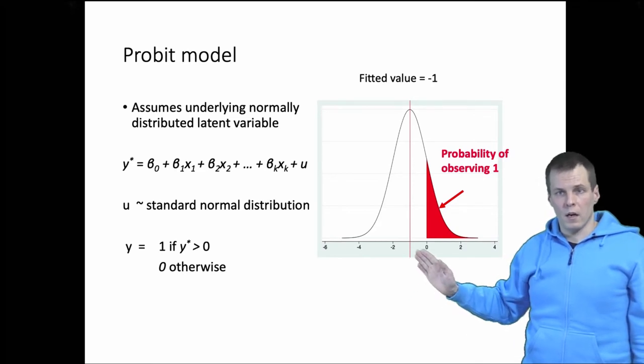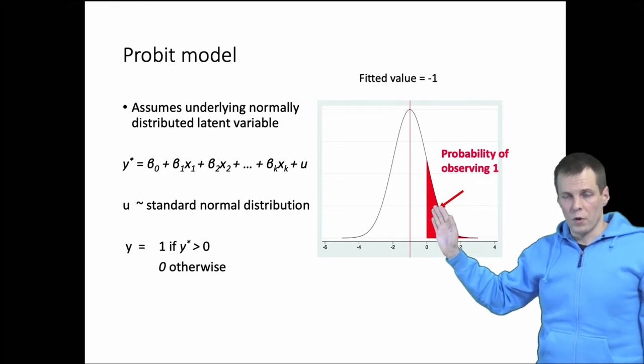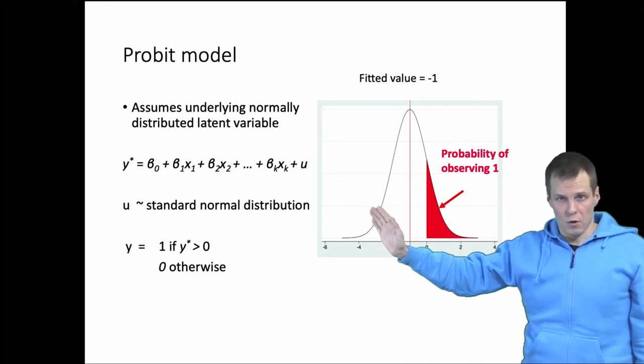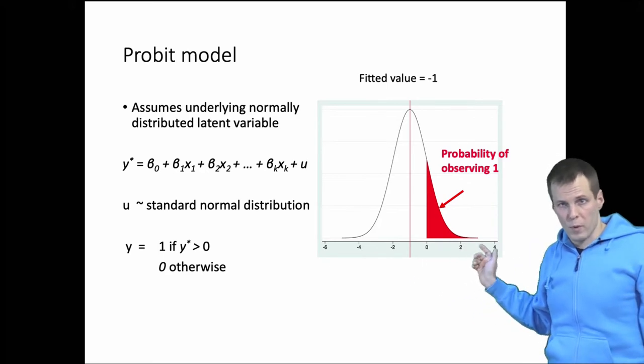Then we look at 0. So what is the area right of the 0? What is the area left of the 0 under this curve? And the area to the right of 0 is the probability of observing 1.